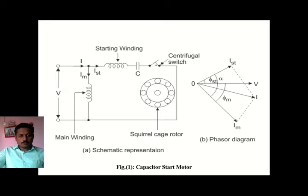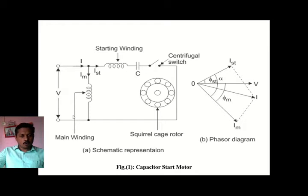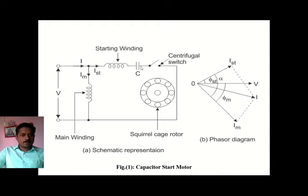The centrifugal switch operates once the motor reaches 70 percent of its rated speed. It will open and remove the auxiliary winding from operation, and the motor will then run on only the main winding and rotor. So the starting winding and capacitor are placed in series with each other.